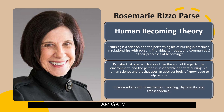The Human Becoming Theory by Rosemary Rizzo Parse is centered around three themes: Meaning, Rhythmicity, and Transcendence. If you want me to do a thorough deep dive study, research, and lecture material about the Human Becoming Theory, all you have to do is let me know in the comment section below.